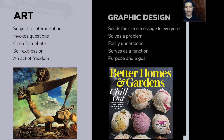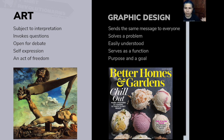Graphic design, on the other hand, sends the same message to everyone. It's meant to solve a problem — it's easily understood, it serves a function, it has a purpose and a goal. Here's the cover of Better Homes and Gardens magazine. It's obviously a summer theme — they used ice cream to represent summer, with an article on a flavor guide. The first thing you see is 'Chill Out.' Very simple message: this is the summer edition of Better Homes and Gardens. That's an example of graphic design.